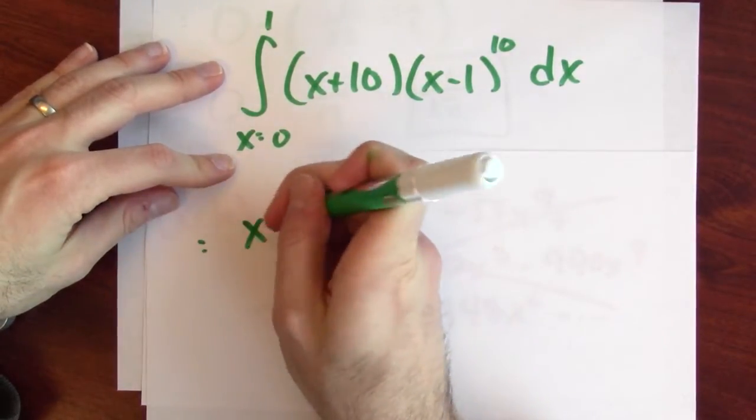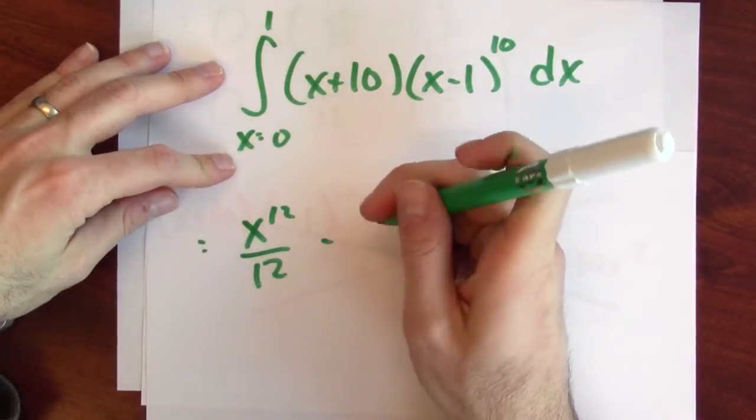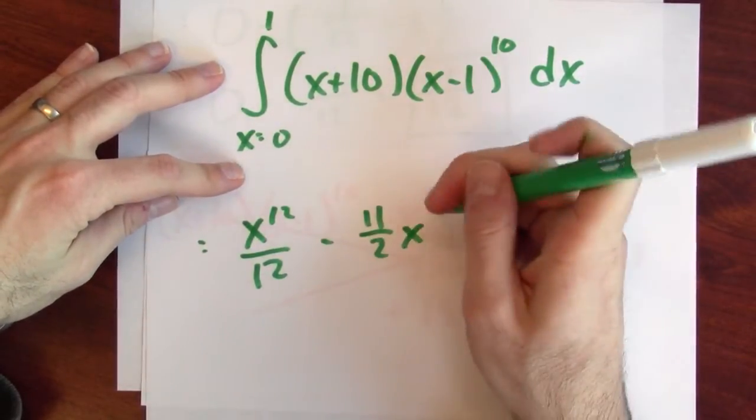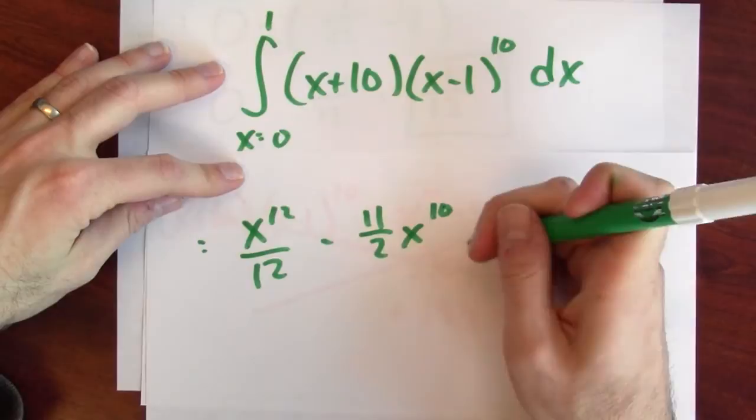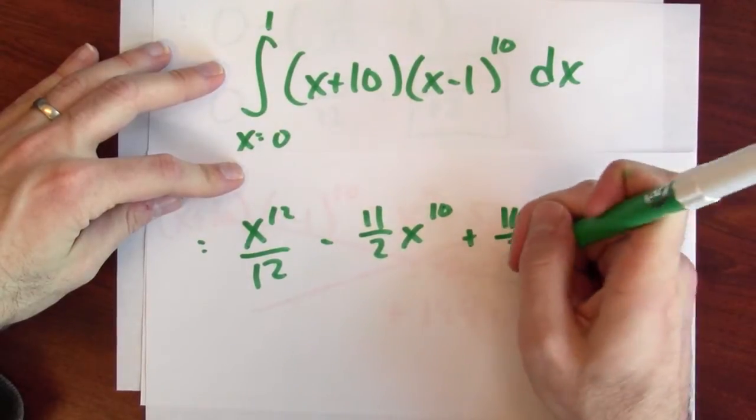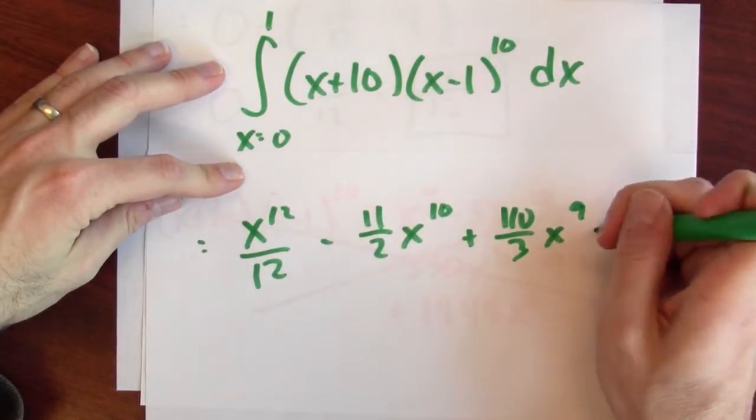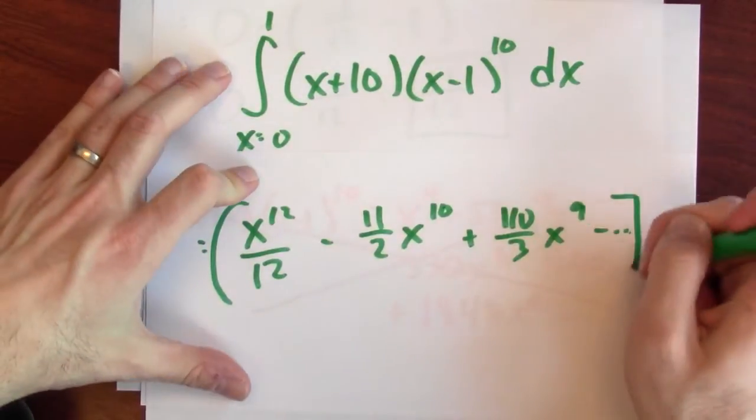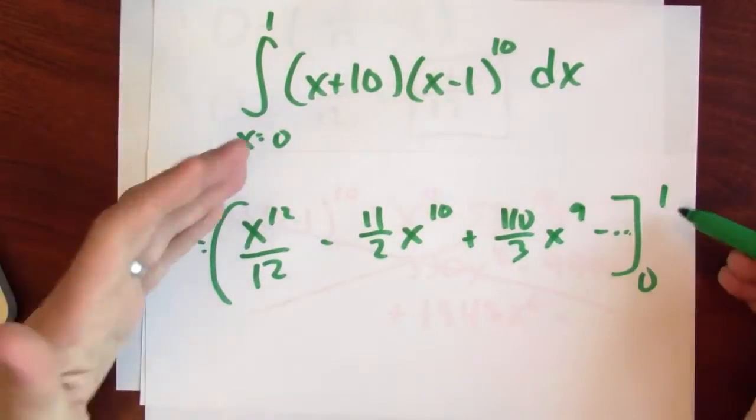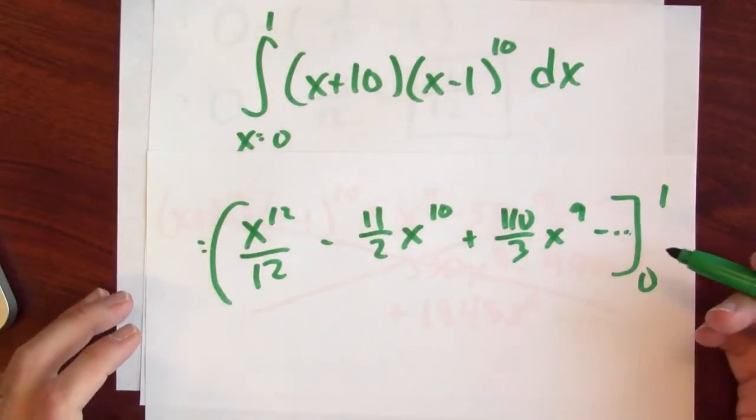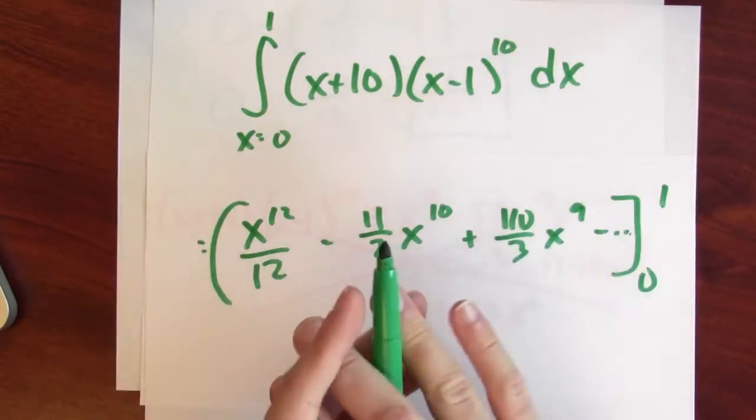you know, I don't know, x to the 12th over 12 minus 11 halves x to the 10th plus 110 thirds x to the 9th, right? And it would keep on going. And I just evaluate that x at 1, x at 0 and take the difference. I mean, I really could have done this by expanding.